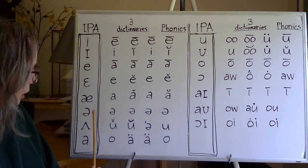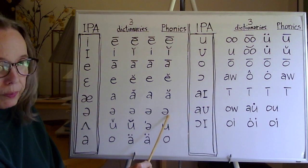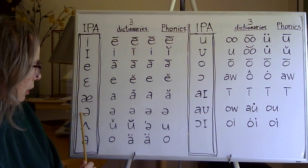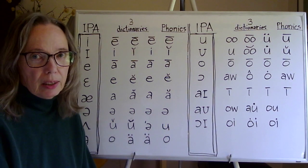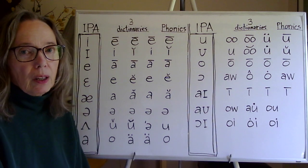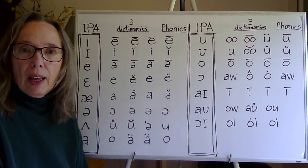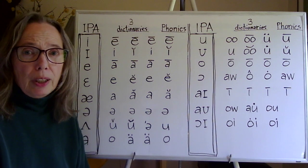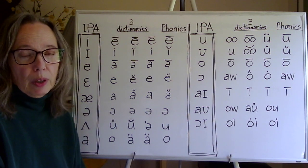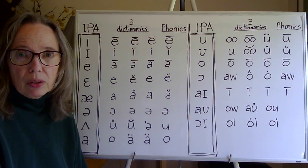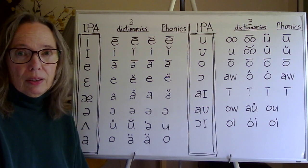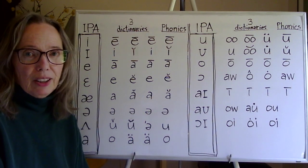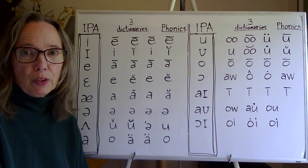The only exception is schwa. Everyone agrees to use this symbol — which is not a letter of the alphabet — for schwa. And in spelling, we use one of the five vowel letters for schwa, even though you know it could be a different vowel letter.